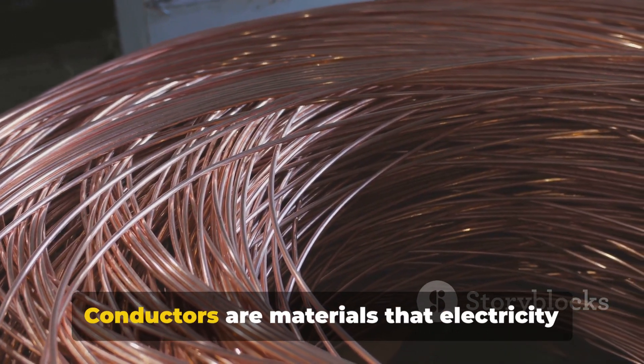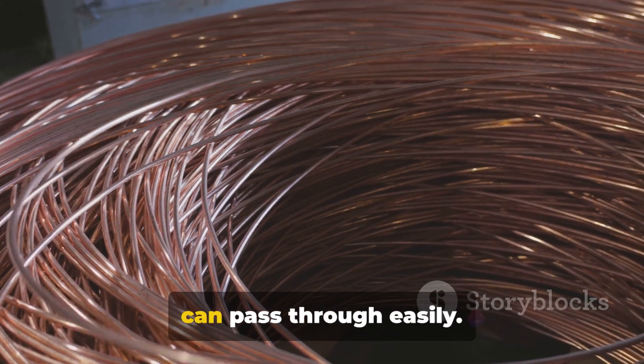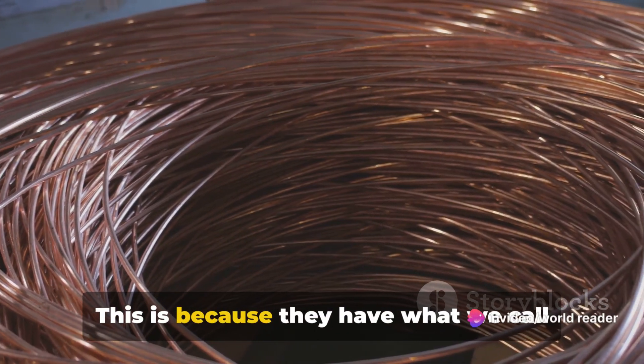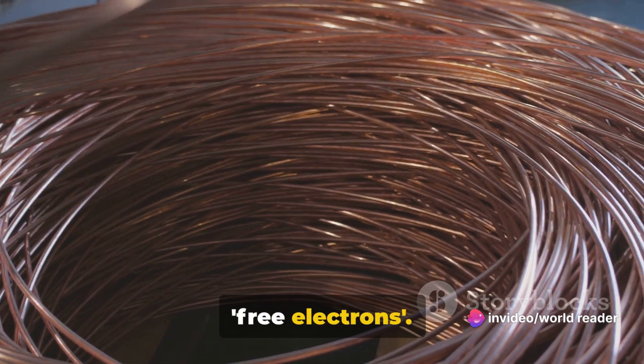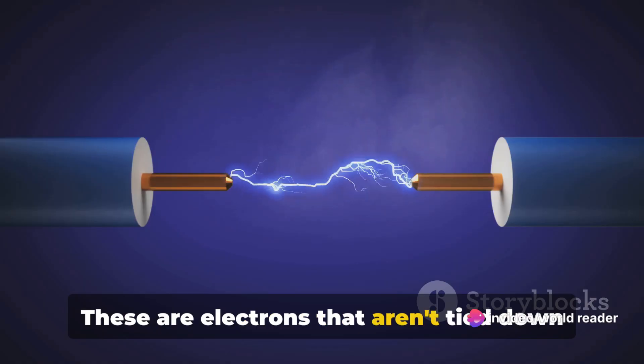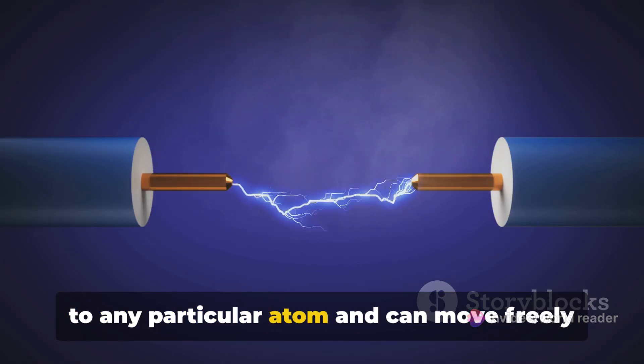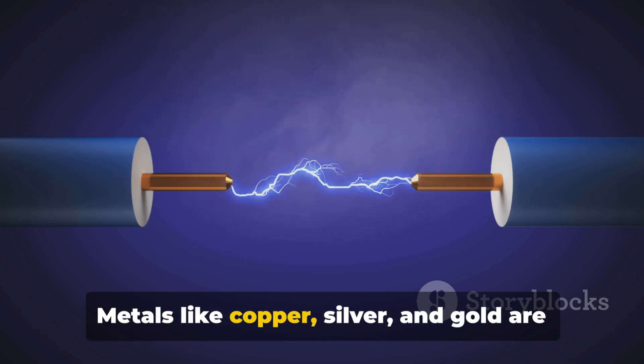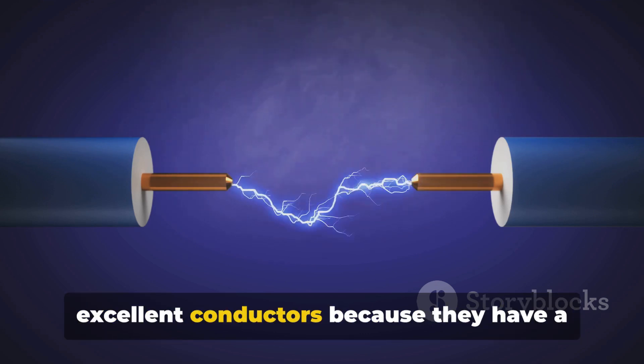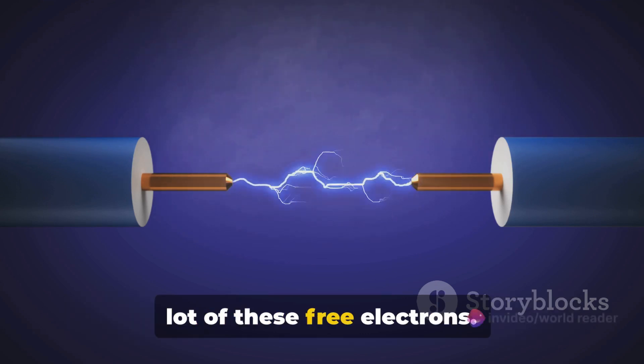Let's start with conductors. Conductors are materials that electricity can pass through easily. This is because they have what we call free electrons. These are electrons that aren't tied down to any particular atom and can move freely throughout the material. Metals like copper, silver, and gold are excellent conductors because they have a lot of these free electrons.